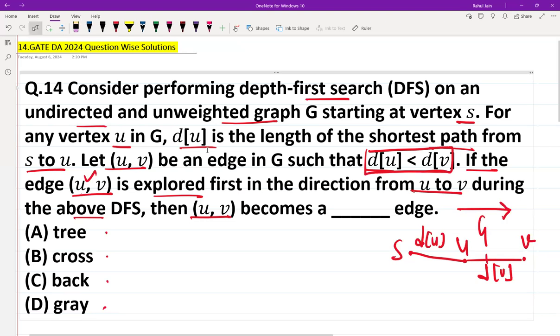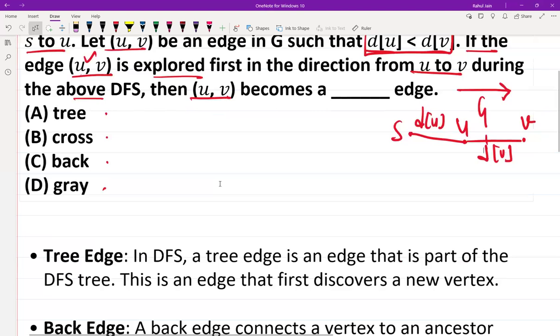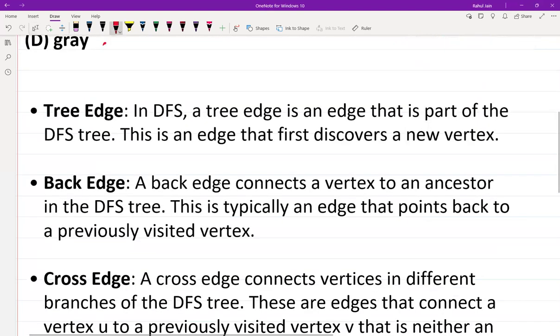We only need to know the concept of these four options. If we talk about tree edge, in DFS, a tree edge is an edge that is part of the DFS tree. This is an edge that first discovers a new vertex.